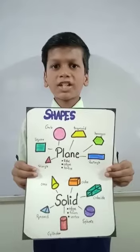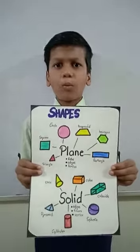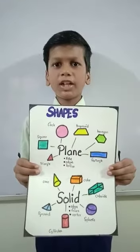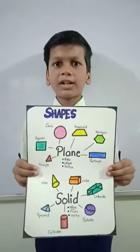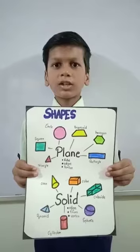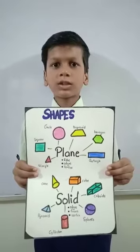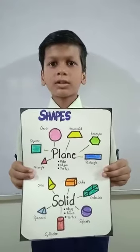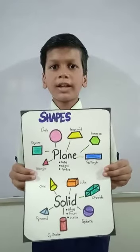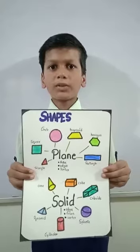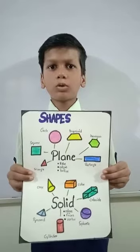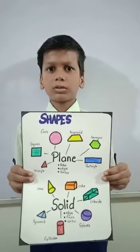There is not just one shape that makes up our world. There are many, including triangles, circles, ovals, and diamonds. You may find even more than these. Today I am going to classify shapes into two groups.